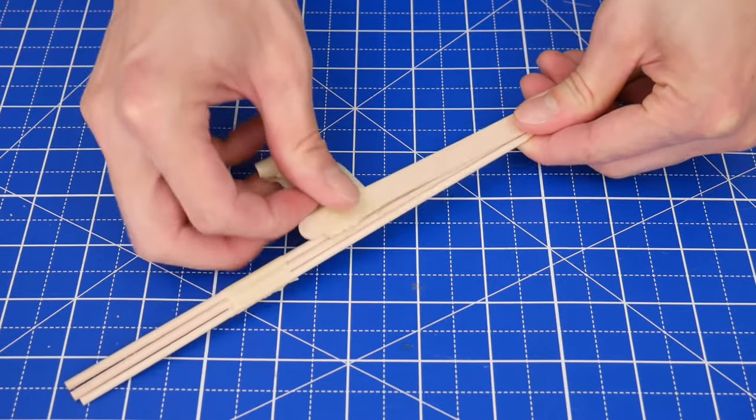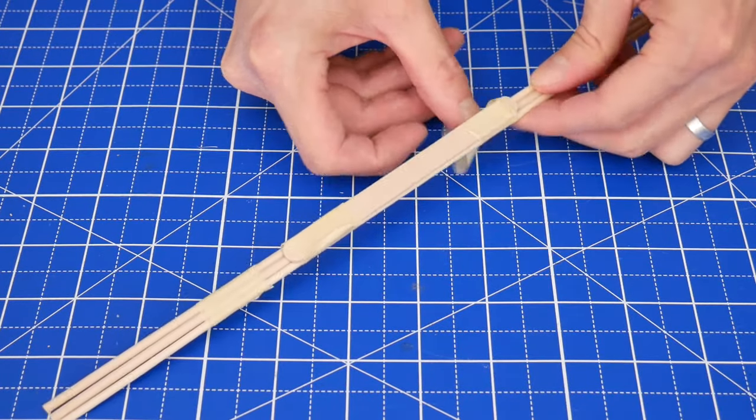Then tape a craft stick to the middle. This is going to help reinforce the arm and help keep it flat.